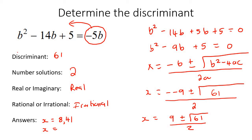And then we have a second answer. Using the minus, that gives us 0.59. So we've got two answers — that's exactly what we said. Number of solutions: two. Are they real? Yes, those are real numbers. Are they irrational? Yes, they have those ugly decimals that just keep going — that is the definition of an irrational number. By using the discriminant, we were able to tell a lot about the answers without even having to calculate them.